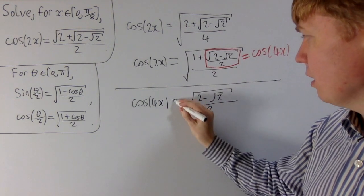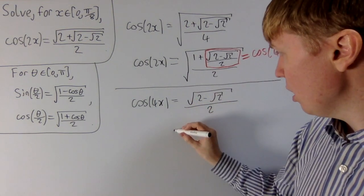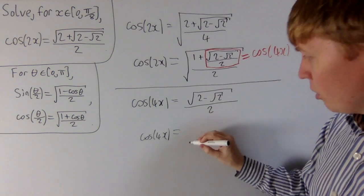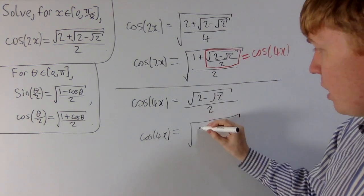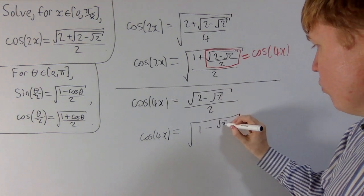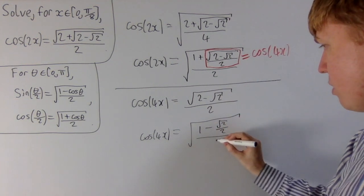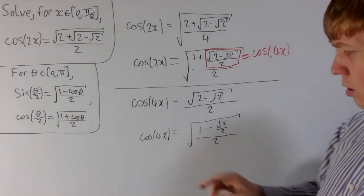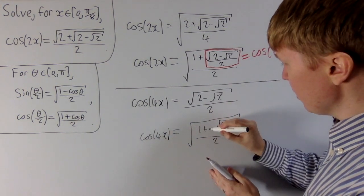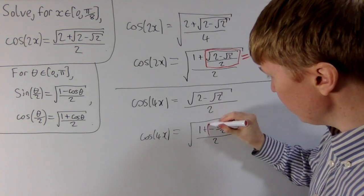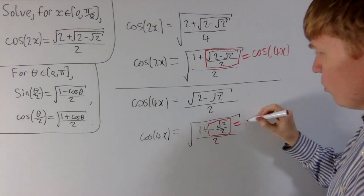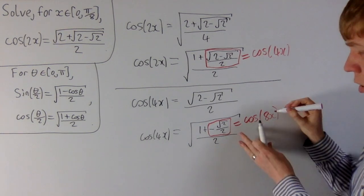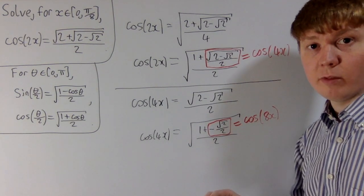We can apply the same trick again using the half-angle formula for cosine. Writing cos 4x equals the square root of 2 minus root 2, divided by 2, then taking the 2 inside the square root and dividing top and bottom by 2 in one step, we get 1 minus root 2 over 2, all divided by 2. The square root of this equals cos 4x. Now it's 1 plus minus this expression, so we have minus root 2 over 2, which equals cos of double the angle — cos 8x. This is something we can actually solve now, so I'll clear the board.